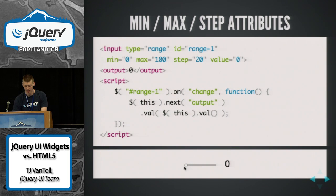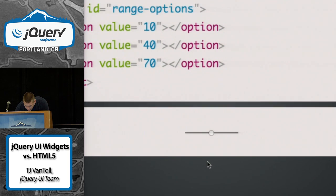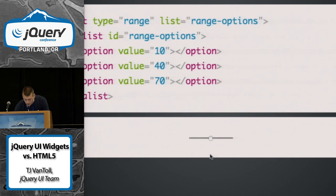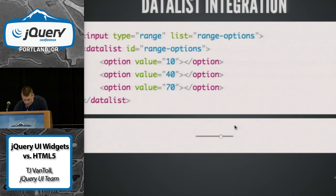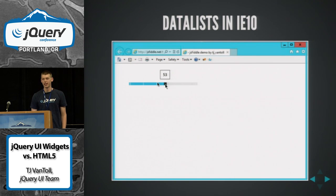Min, max, and step again — the browser will snap to the steps and enforce those mins and maxes. Data list integration as well — Chrome will usually put up a little tick mark where these options are and will actually snap to those values. IE does something similar — little white lines corresponding to data list options to show the user suggested points.